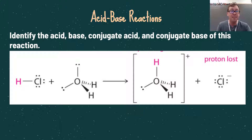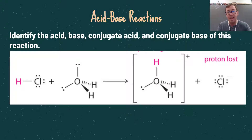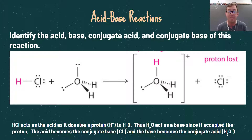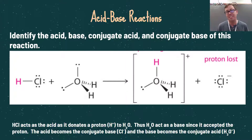Let's identify the acid, base, conjugate acid, and conjugate base of this reaction. We have HCl and water, and the H in HCl is donated to H2O to create H3O+ and Cl-. HCl is the acid because it donates the hydrogen to H2O. H2O is accepting the hydrogen, so H2O is acting as a base. The acid becomes the conjugate base — HCl becomes Cl-, so Cl- is the conjugate base. And the base H2O becomes the conjugate acid H3O+. As long as you know where the hydrogen is coming from and where it goes, you can easily identify acids, bases, conjugate acids, and conjugate bases.